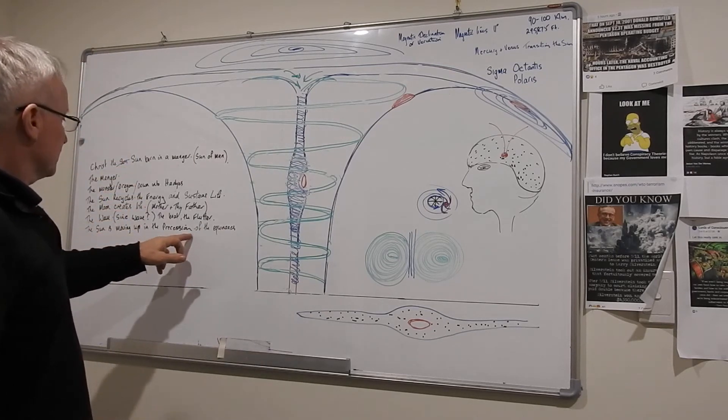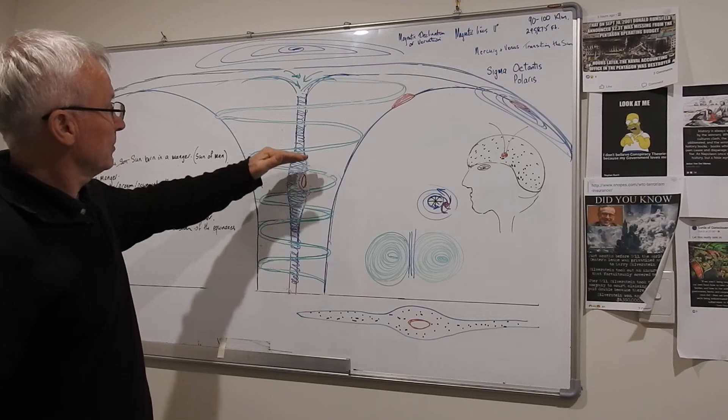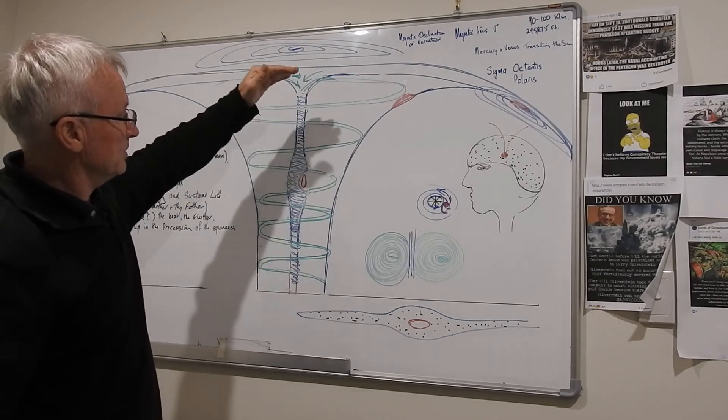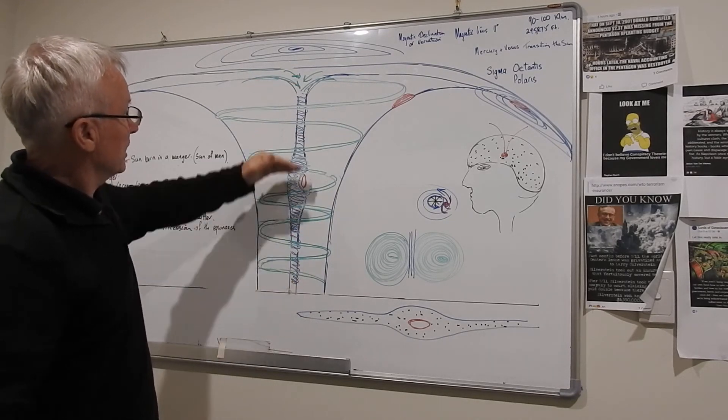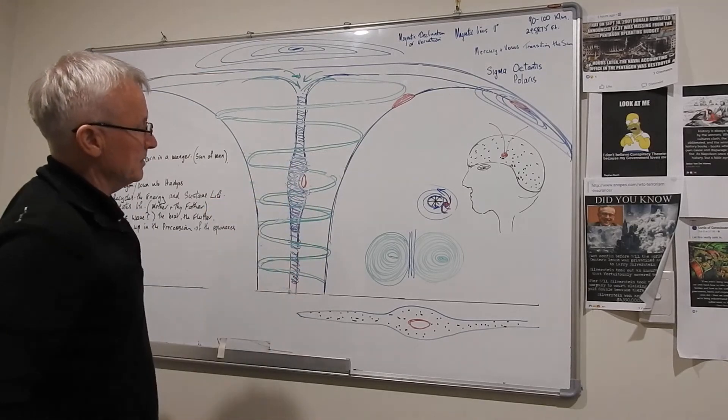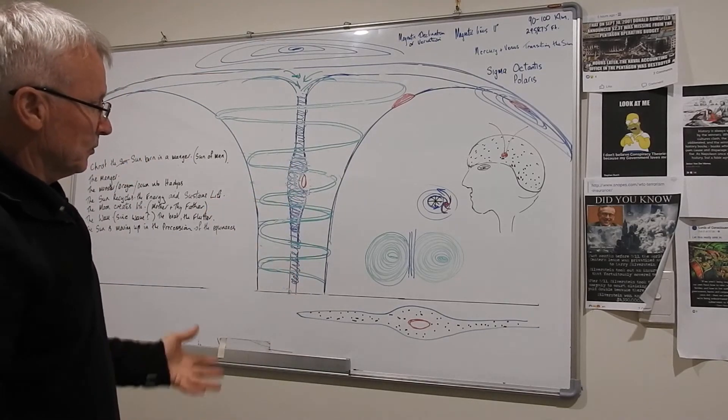The sun is moving up in the procession of the equinoxes. Everything moves up over the procession, 26,000 years up and down. So it must go up, get sucked down and come back up again, 26,000 years. It's all there.